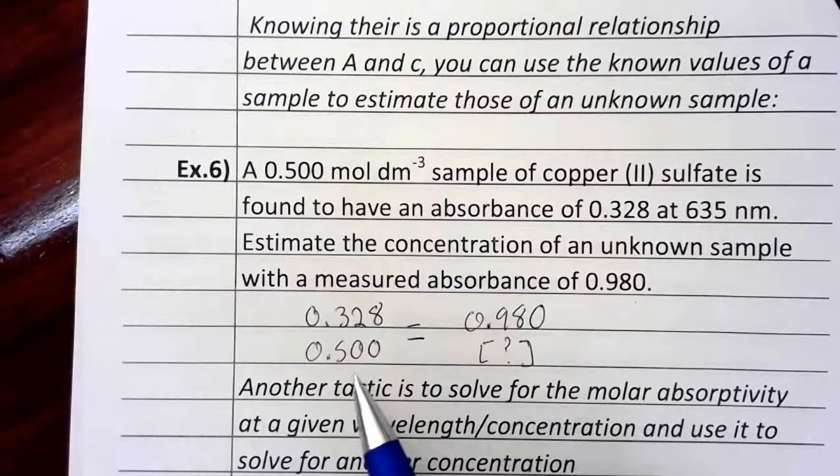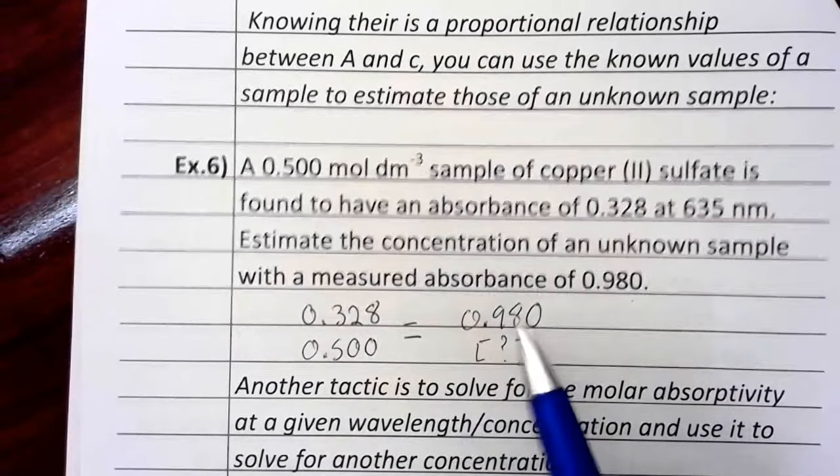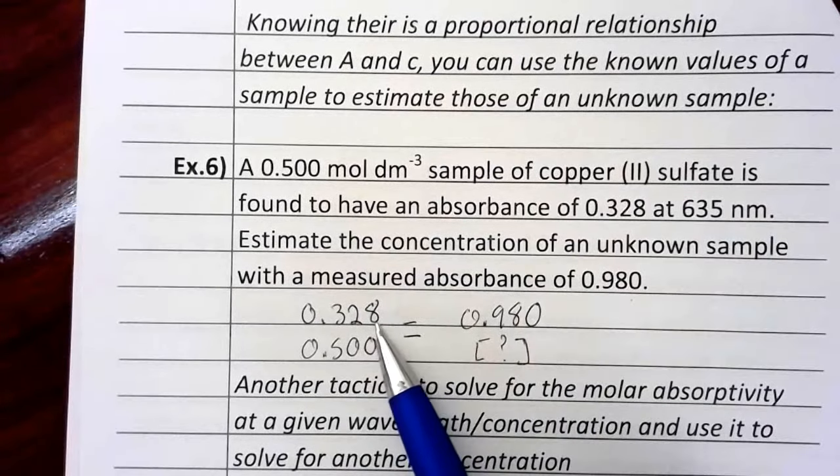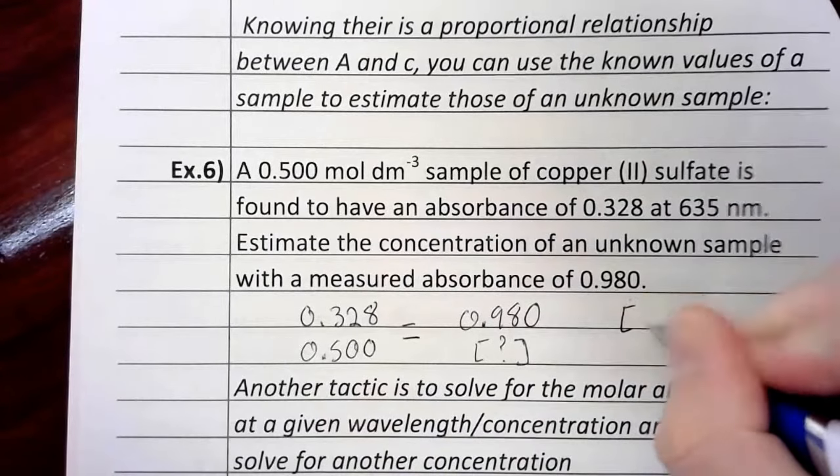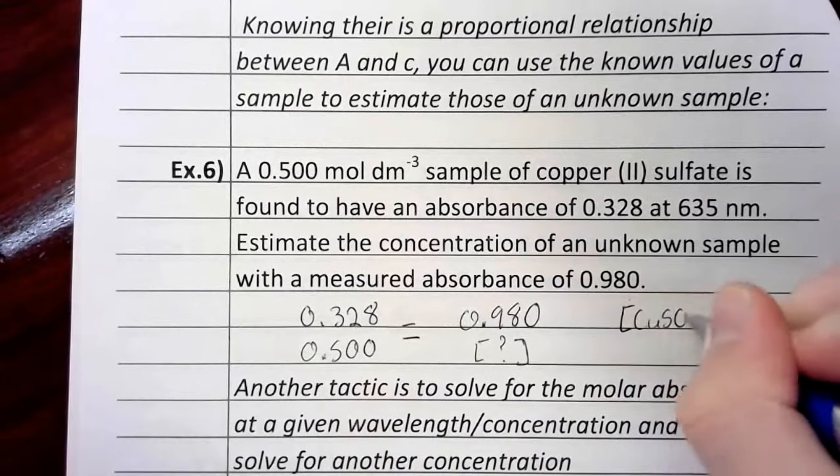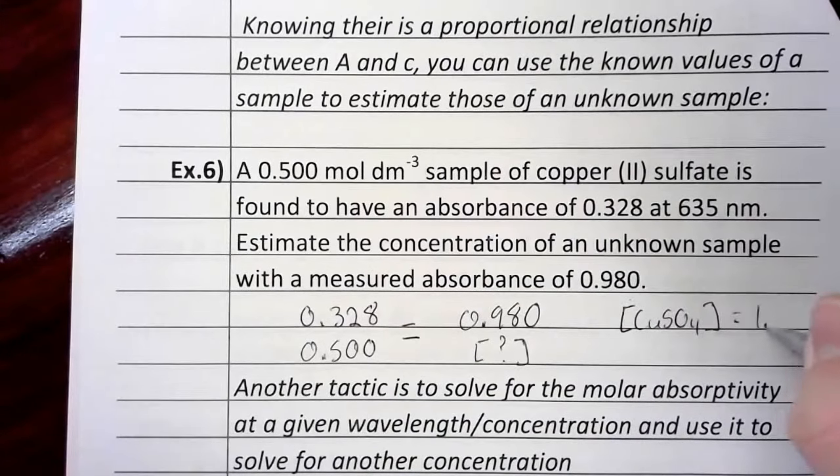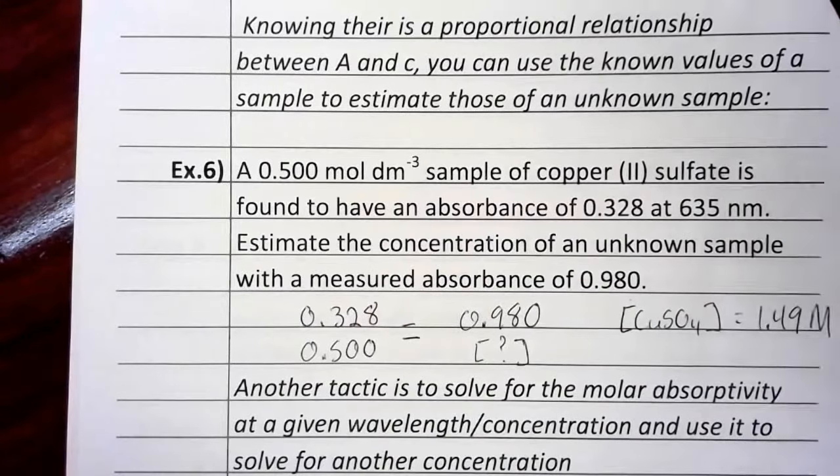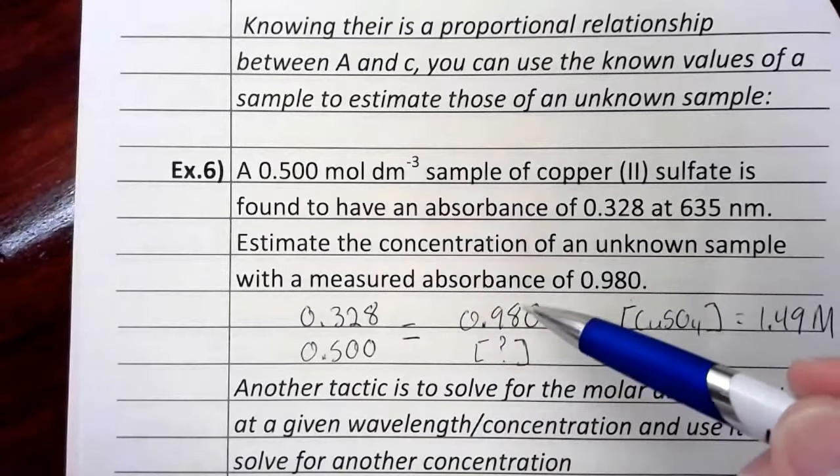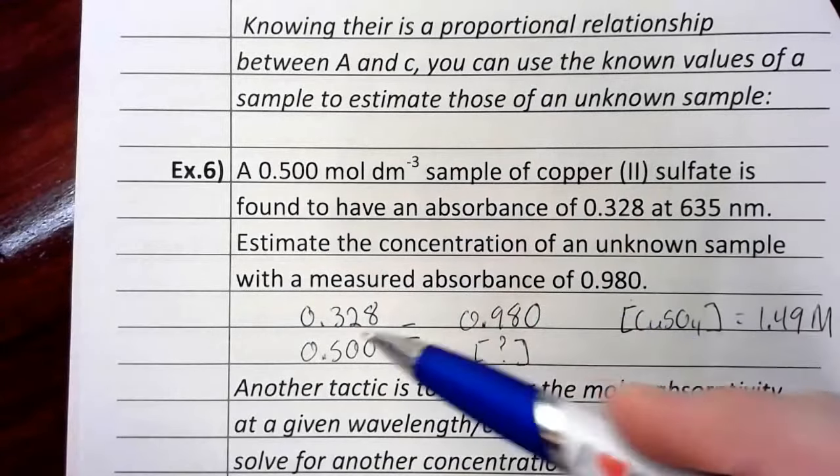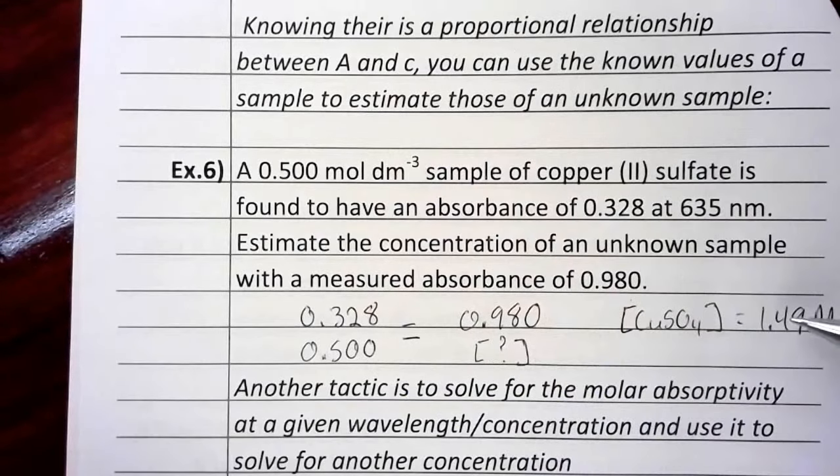Here's how I would have done it. I would have multiplied 0.5 by 0.980. And then I would have divided that by the 0.328. And what you should have gotten if you did that, rounding off to three sig figs, is that the concentration of the copper sulfate here was 1.49 molarity. So if you notice, if the absorbance goes up by roughly a factor of 3, which it did, we expect the concentration to also go up by roughly a factor of 3, which it did.